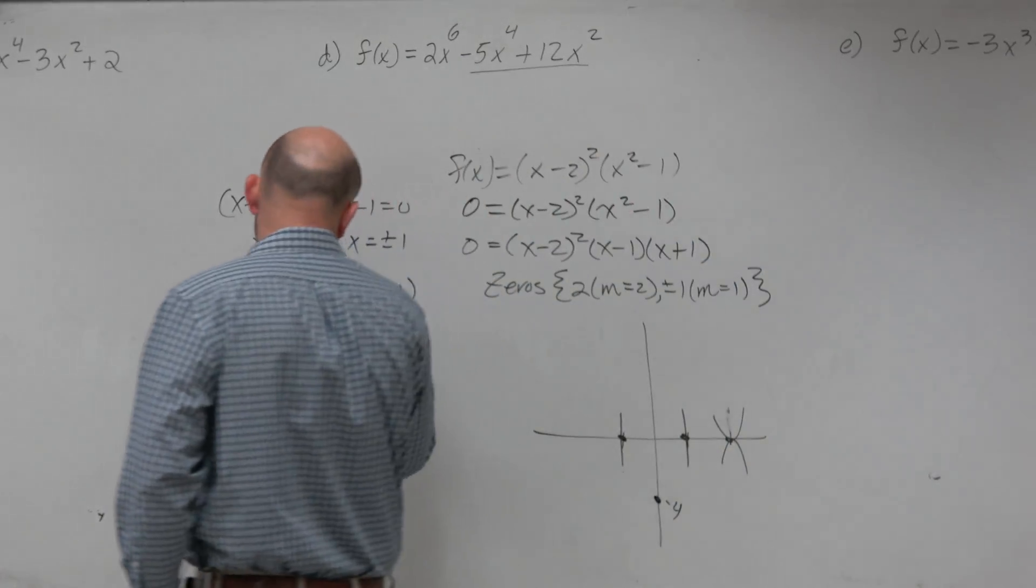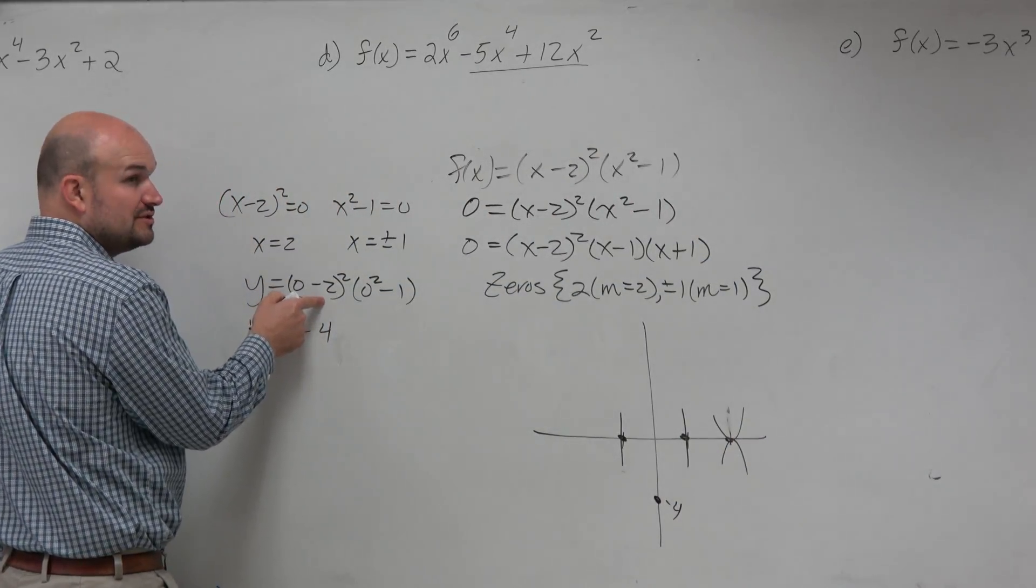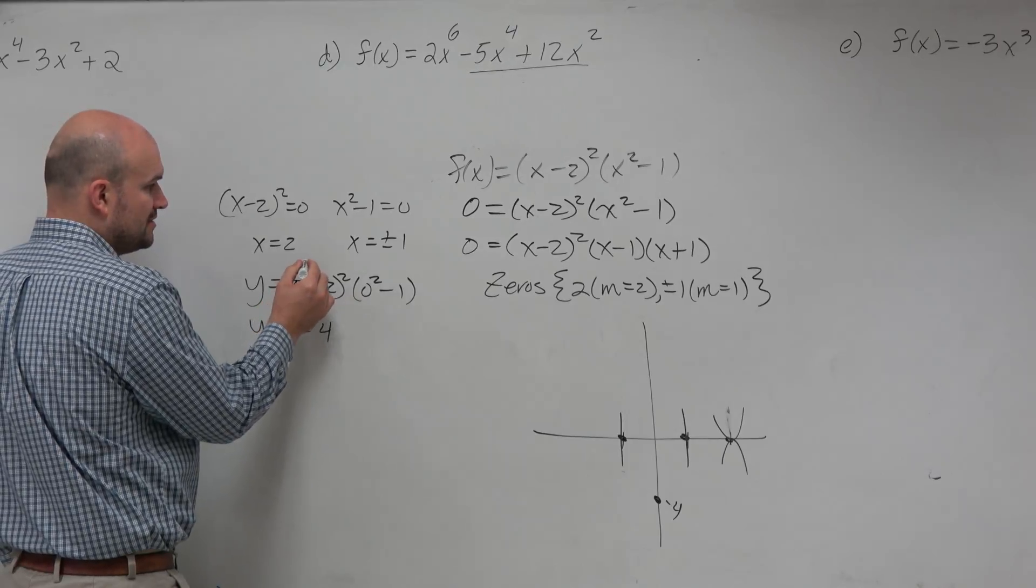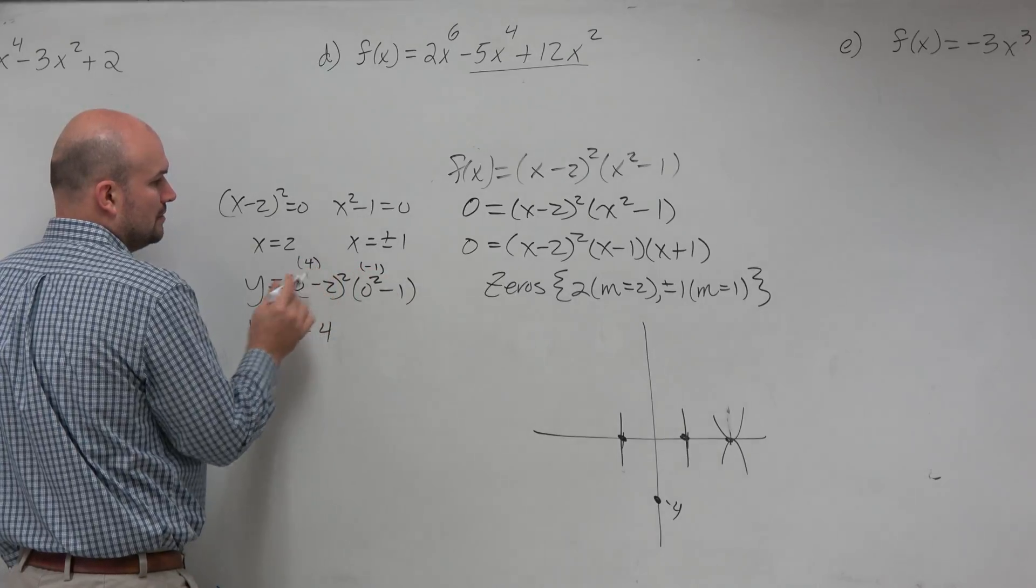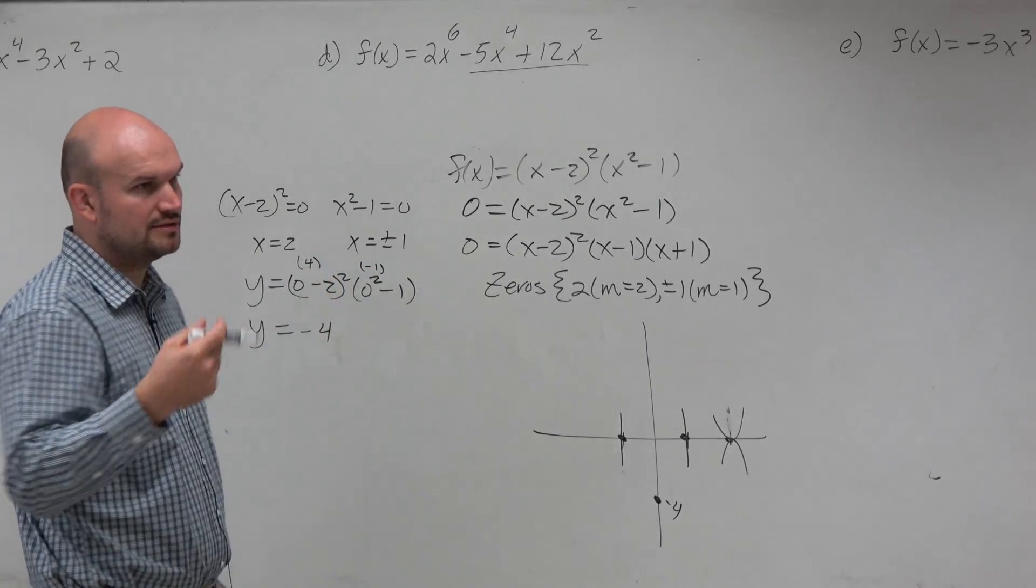How would you get negative 4? Well, 0 minus 2 is negative 2. Negative 2 squared is 4. 0 squared is 0. 0 minus 1 is negative 1. Yeah, the negative is the square.